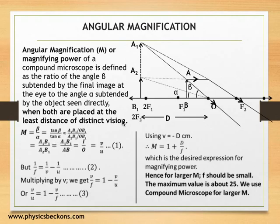And tan α is A₂B₁ over OB₁. As you can see here, OB₁ cancels out. You get A₁B₁ over A₂B₁. A₂B₁ is same as object size AB, so you get magnifying power as image size i over object size o, which is the magnification produced by a lens and is also given by v over u.